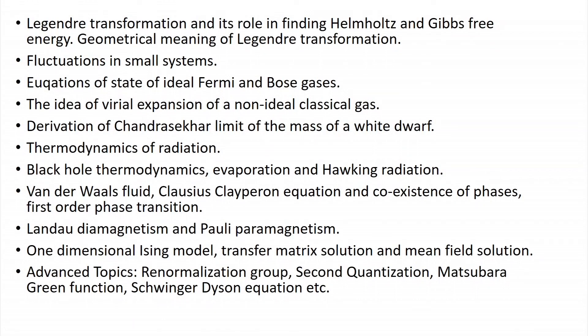Then I am going to derive the equations of state of ideal Bose and Fermi gases, which requires some effort in terms of series expansions and so forth. Then I am going to discuss what is known as a virial expansion — similar expansions are possible in the context of non-ideal classical gases. Non-ideal because ideal gases are too simple for a classical gas. If you have a non-ideal classical gas, you can do something similar and the expansions in that context are known as a virial expansion.